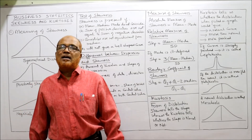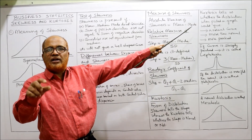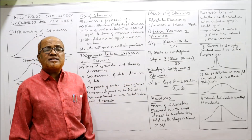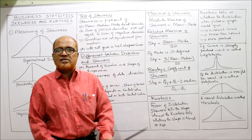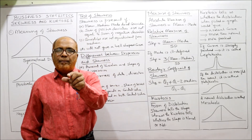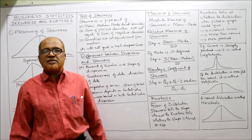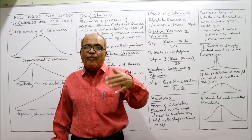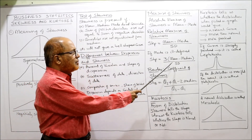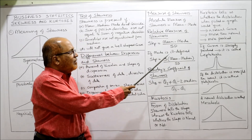Now, how to calculate skewness — the measures of skewness. The absolute measure is: mean minus mode. For the relative measure — the coefficient of skewness — Karl Pearson has given a formula. Karl Pearson's formula, known as SKP, is: SKP = (Mean − Mode) / Standard Deviation. This is the relative measure of skewness given by Karl Pearson. If mode is ill-defined, the alternative formula is: SKP = 3 × (Mean − Median) / Standard Deviation. This alternative is applied when mode cannot be ascertained.